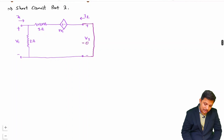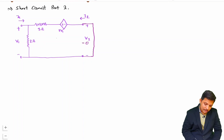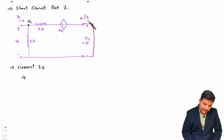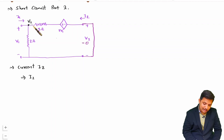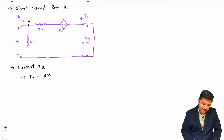Looking at the equivalent circuit carefully, the branch carrying current i2 has node voltage v1. To find i2, use tail voltage minus head voltage divided by resistance — tail voltage is 3v1, head voltage is v1, and resistance is 1 ohm. So i2 = (3v1 − v1) / 1 = 2v1.